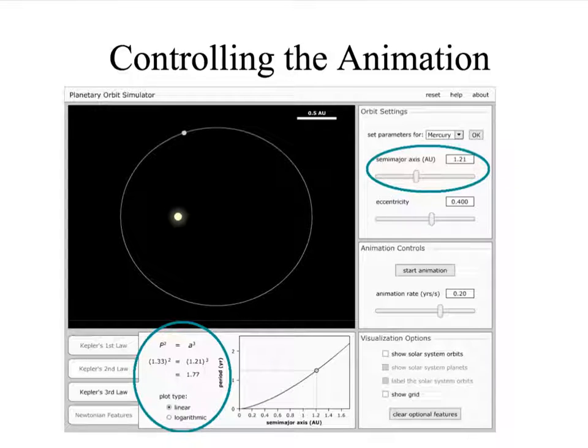Now remember Kepler's third law tells us that the period of the planet squared, the period measured in years, you take that number and square it. That's equal to the distance of the semi-major axis cubed to the third power. And so you can see here that both of these are equal to 1.77 and you can adjust the size of the semi-major axis and see what happens to the period of the planet.